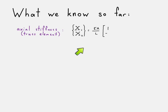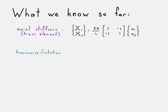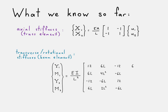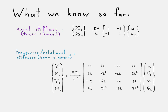Here we have our stiffness matrix being rewritten for a truss element. Then we go ahead and take a look at our transverse or rotational stiffness, and we learned about this for a beam element. So we have Y1, Y2 — those are our shears — and M1, M2, that's our bending moment. Here's our stiffness matrix that we have for a beam element.